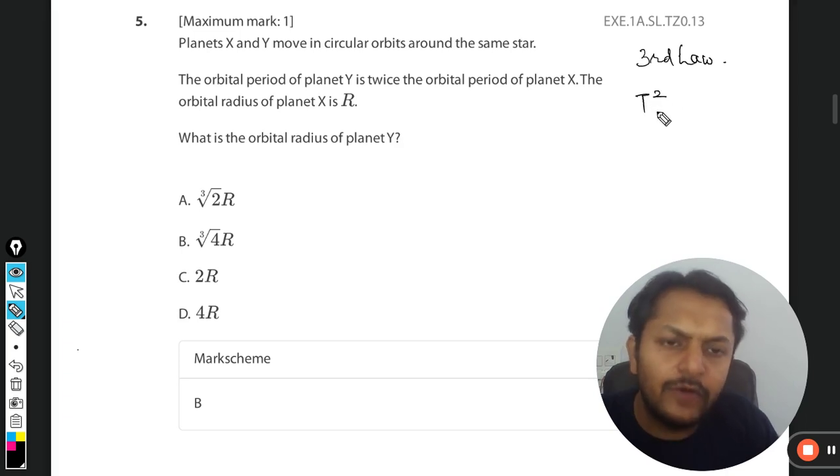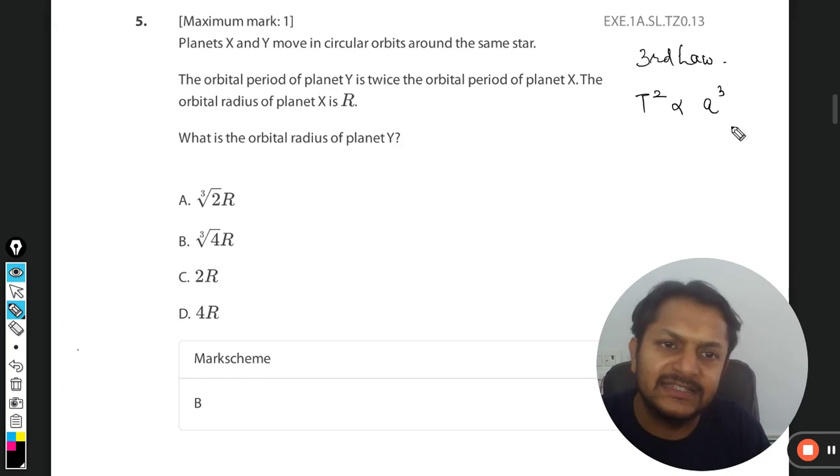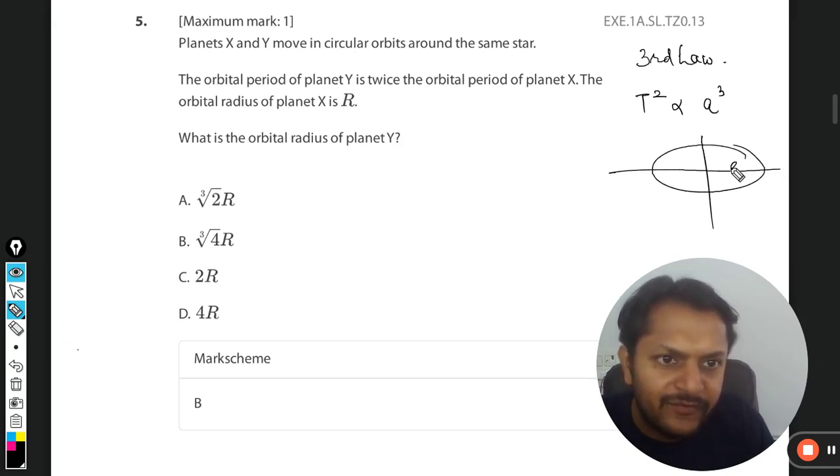According to that law, the square of the time period is directly proportional to the cube of semi-major distance. In that video I explained what is semi-major distance and all. Here we can take it in brief. This thing is a and the total time taken is T.